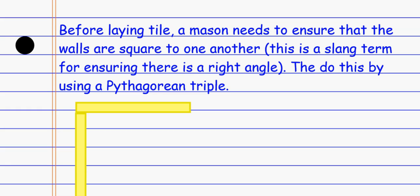Before laying tile, a mason needs to ensure that the walls are square to one another. When we talk about it from a construction perspective, the word square just means making sure that you have right angles all over the place.